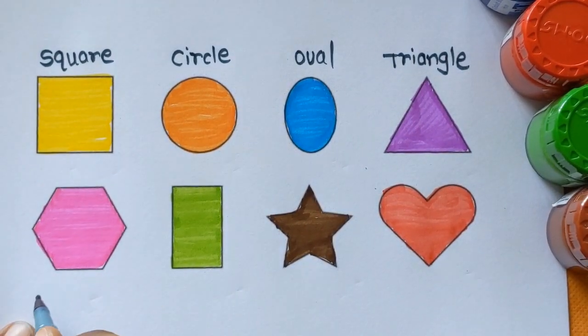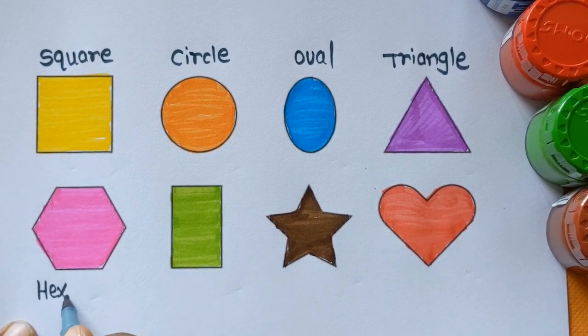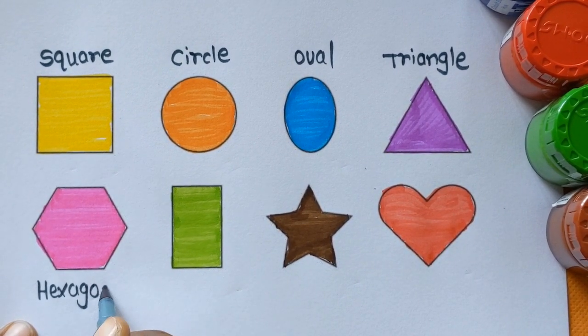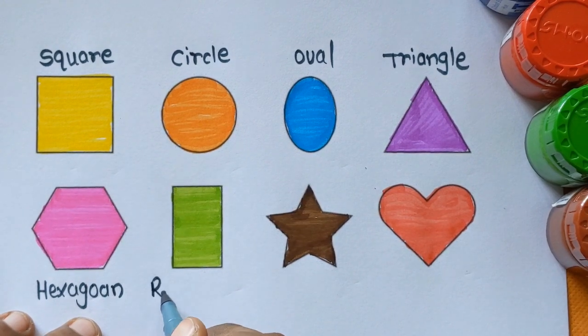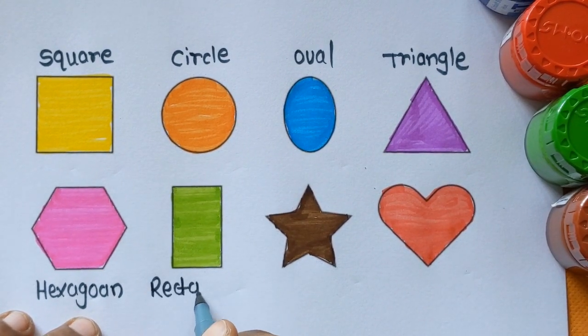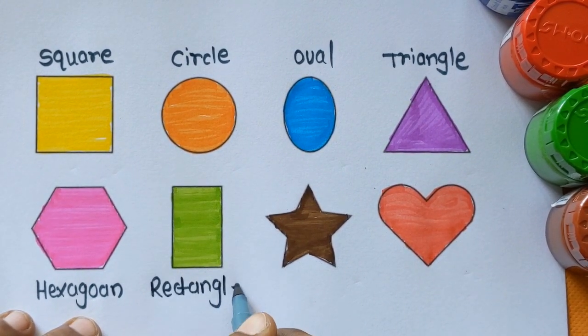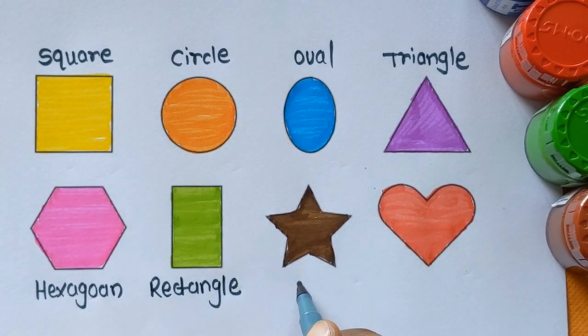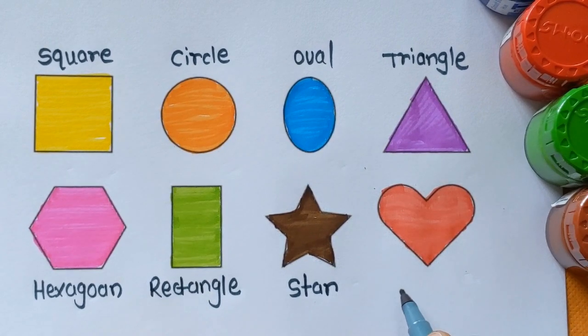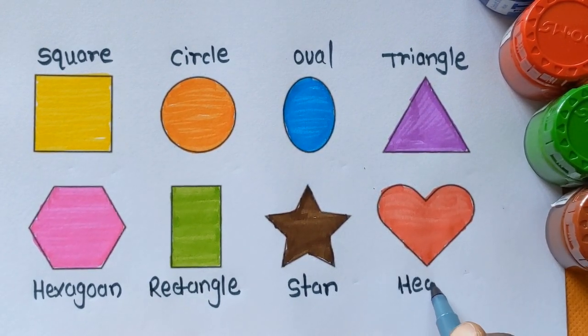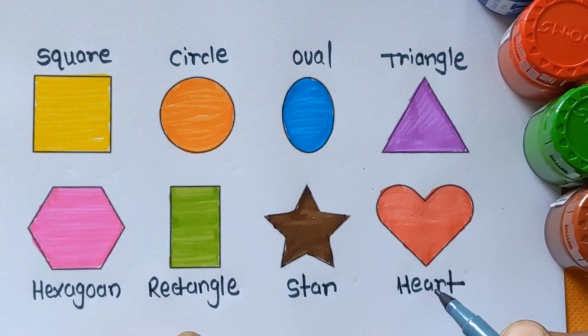Hexagon with a pink color. Which shape is this, kids? This is rectangle with a light green color. Star, brown color. And heart with a red color.